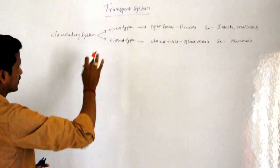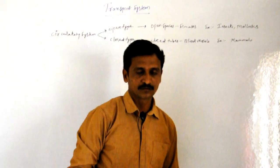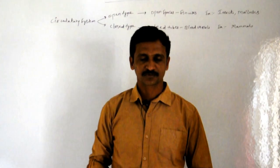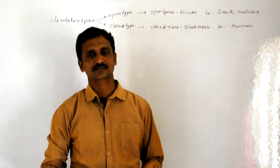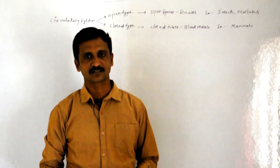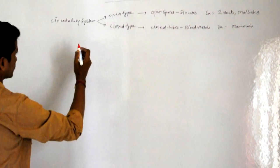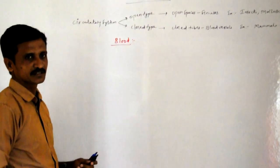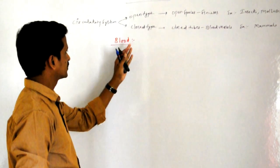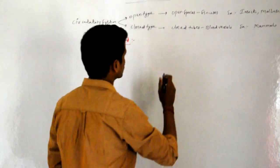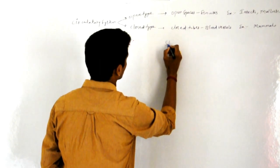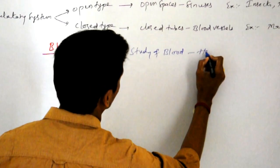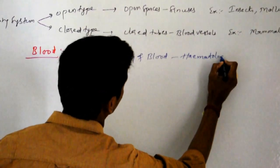In part 1 we are going to discuss complete study of blood and blood groups. In part 2 we are going to see the structure and working mechanism of heart and blood vessels. Before entering the concept, we need to study 2-3 technical terms. The study of blood is called hematology.